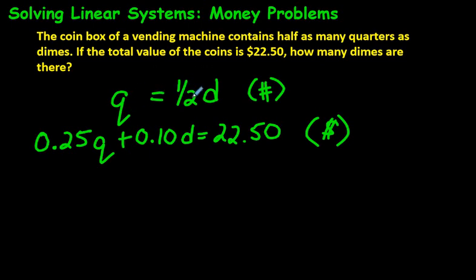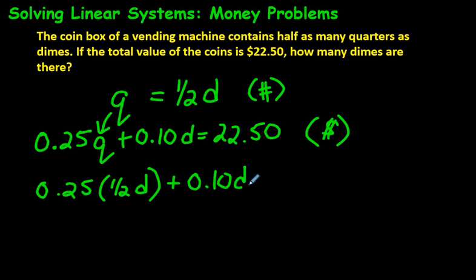Now, if Q is equal to 1/2 D, all we have to do, wherever we see Q, which is right there, we can literally just write 1/2 D right there, and then we'll have only one variable, which will be the letter D, and we'll be able to solve this thing. So let's figure that out right now. It would be 0.25. Now, instead of Q, I'm going to put a bracket and write 1/2 D, plus, let's just write everything else just like it was.